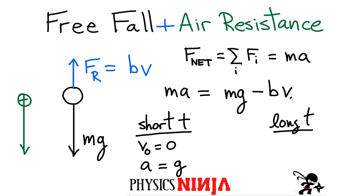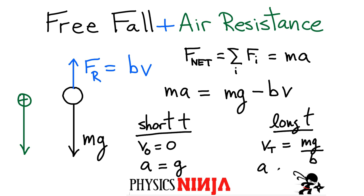In the long time limit, the Bv term keeps getting bigger as time goes on, and eventually it equals the weight. When that happens the acceleration goes to zero — this is when we have our terminal velocity. The velocity doesn't increase forever; we eventually reach a terminal velocity and there's no more acceleration.